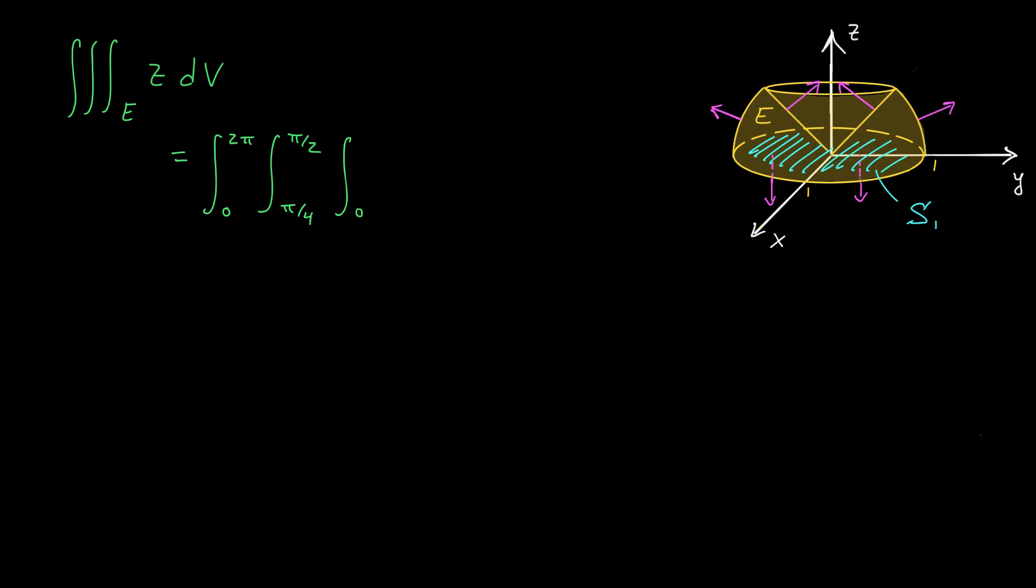And our ρ value will extend from 0 all the way out until the boundary of the sphere, which is of radius 1. Finally, we'll express z as ρ cos φ, and we'll change our volume factor to ρ² sin φ dρ dφ dθ. It looks complicated, but it's actually not that hard.